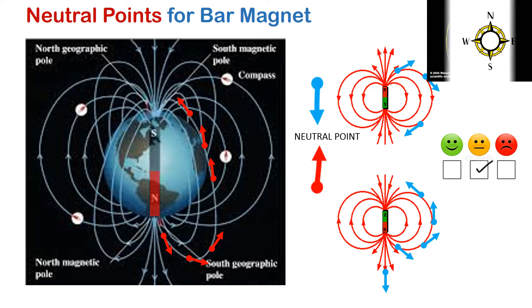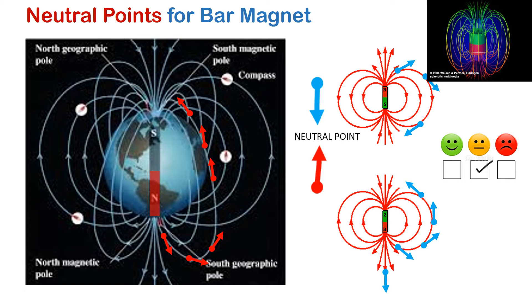This neutral point can be imagined as a ring surrounding the magnet, so all the points around the magnet at that distance will have no magnetic field — that is the neutral point.